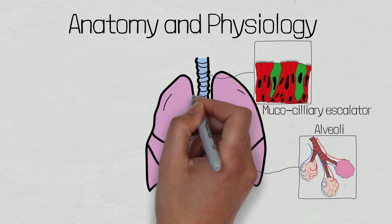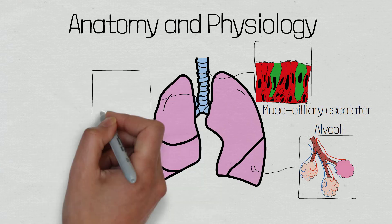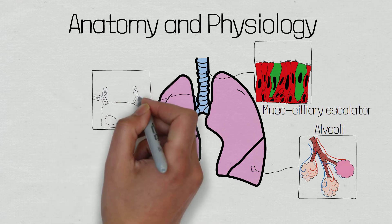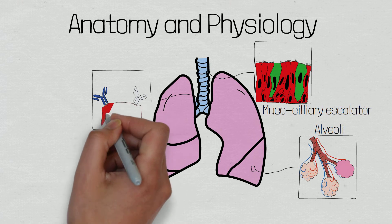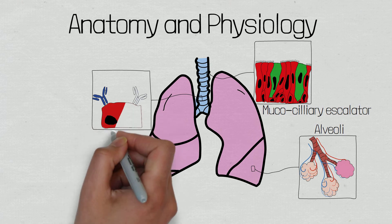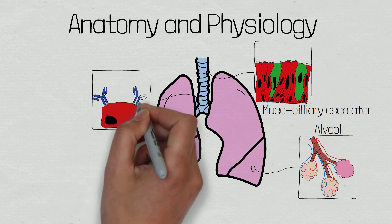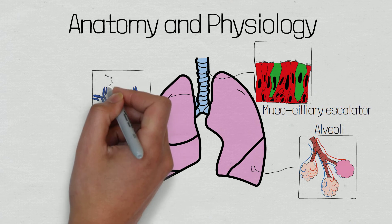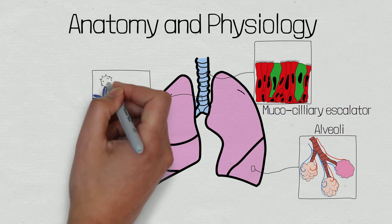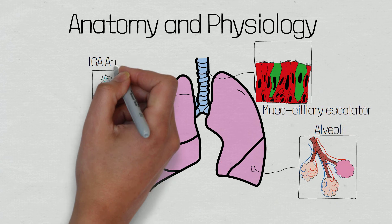Presented on the surface membrane of cells there are immunoglobulin A antibodies, which make up part of the adaptive immune system. Immunoglobulin A antibodies work by binding pathogens and neutralising them to prevent them from causing an infection.